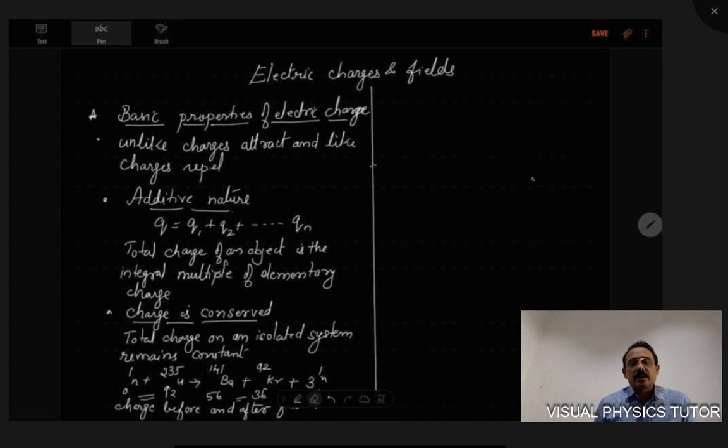So what's an electric charge? It's an intrinsic property of elementary particles of matter which gives rise to electric force between various objects. Now the question is, are charges measurable? Of course charges are measurable because charge is a physical quantity.